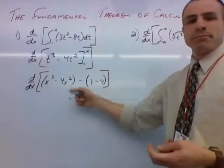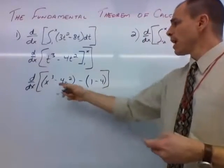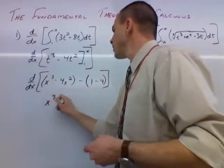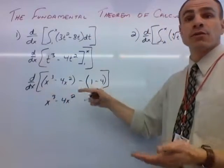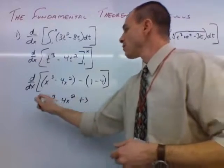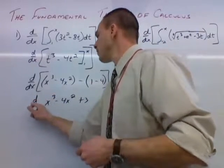So what do we want to do? We have x cubed minus four x squared, and then this is negative three, but we're subtracting negative three, so it's actually plus three. So we have plus three, and we're taking the derivative of that.